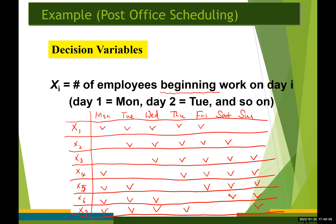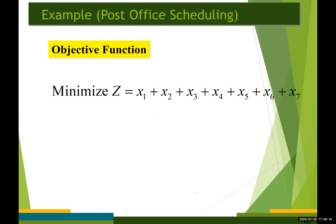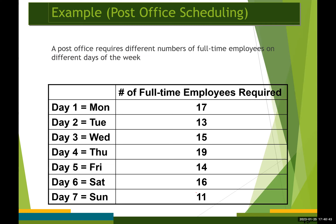Based on this decision variable definition, we come up with the same objective function as before, but this time the objective function does make sense. We want to minimize the total number of full-time employees that must be hired, and this expression does not double count the employees. Now let's move on to the constraints.